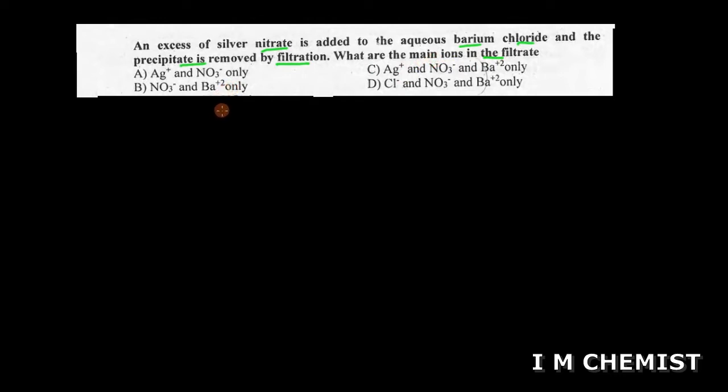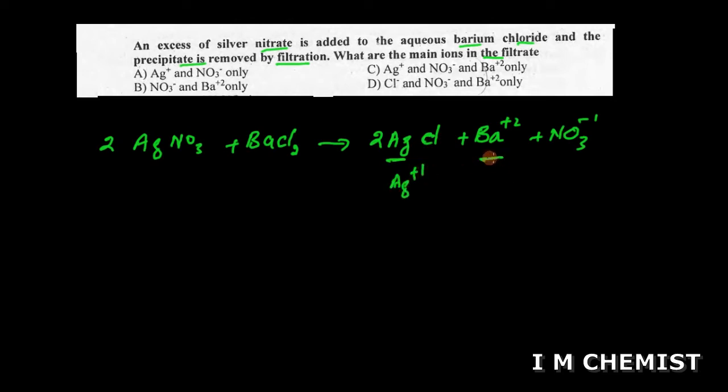Now we have a chemical reaction. When we treat silver nitrate with barium chloride, we take two moles of silver nitrate, which produces two moles of silver chloride along with barium ion and nitrate ion. As you can see in the product, we have silver ion, barium ion, and nitrate ion.